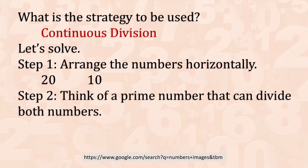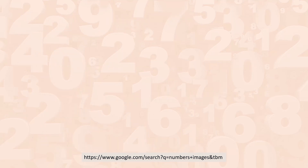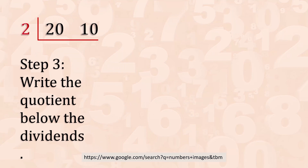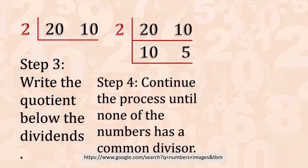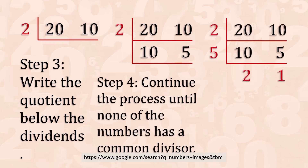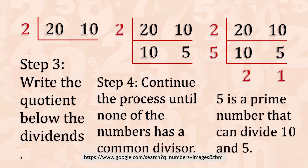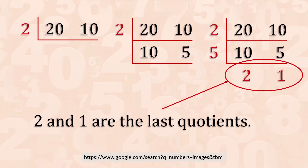Step 2: think of a prime number that can divide both numbers. For 20 and 10, we have 2. Step 3: write the quotient below the dividends. 20 divided by 2 is 10. 10 divided by 2 is 5. Step 4: continue the process until none of the numbers have a common divisor. 5 is a prime number that can divide 10 and 5. 10 divided by 5 is 2. 5 divided by 5 is 1. 2 and 1 are the last quotients.